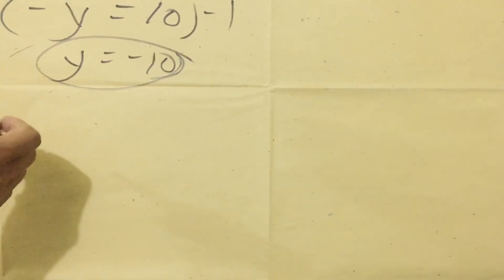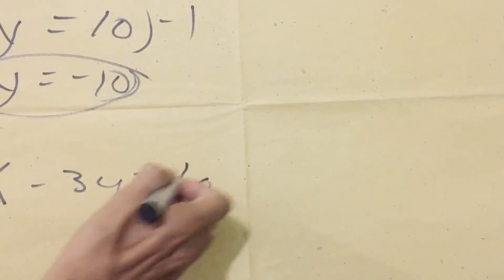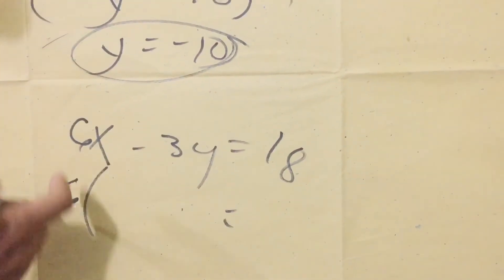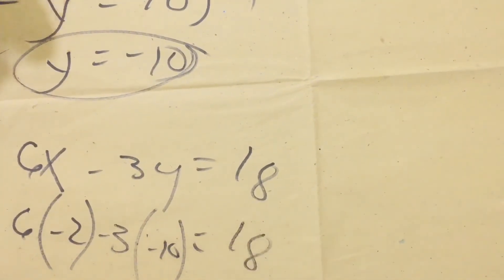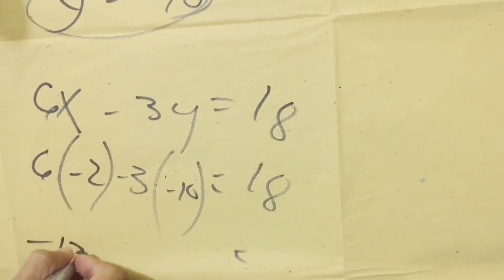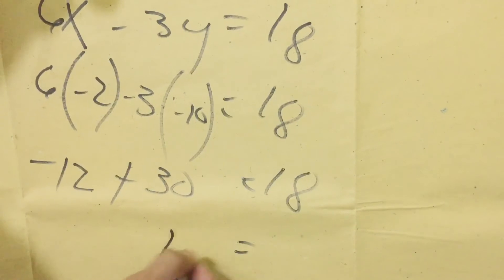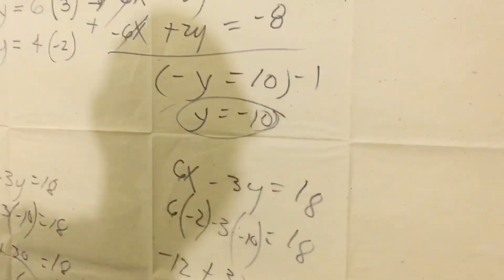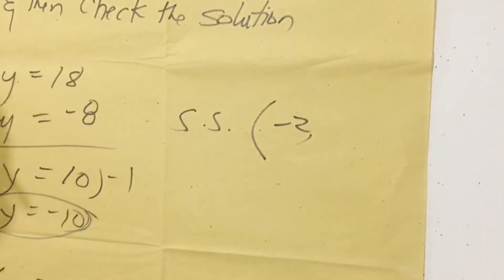Now we check if our answer is correct before stating the solution set. Using equation 1 — 6x minus 3y equals 18 — we substitute x equals negative 2 and y equals negative 10. We get 6 times negative 2, which is negative 12, minus negative 30, which gives positive 30. Negative 12 plus 30 equals 18, which matches. The answer is correct. Therefore, our solution set is x equals negative 2 and y equals negative 10.